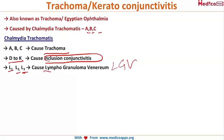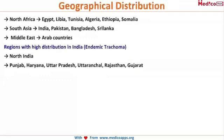The commonest infective cause of blindness in the entire world is trachoma. Now let's look at the geographical distribution of trachoma. In North Africa, it is seen in Egypt, Libya, Tunisia,